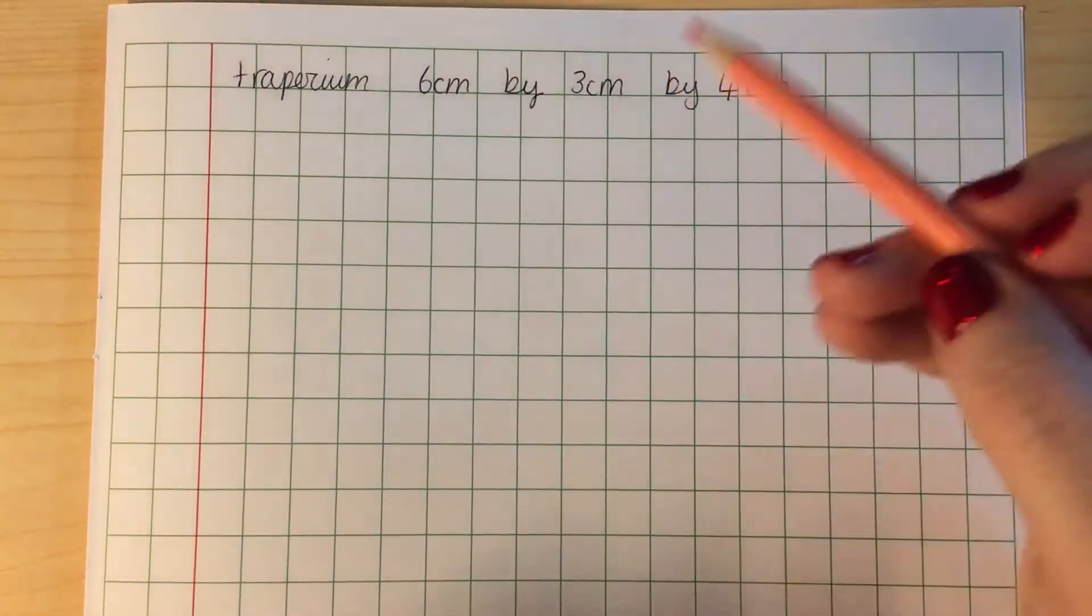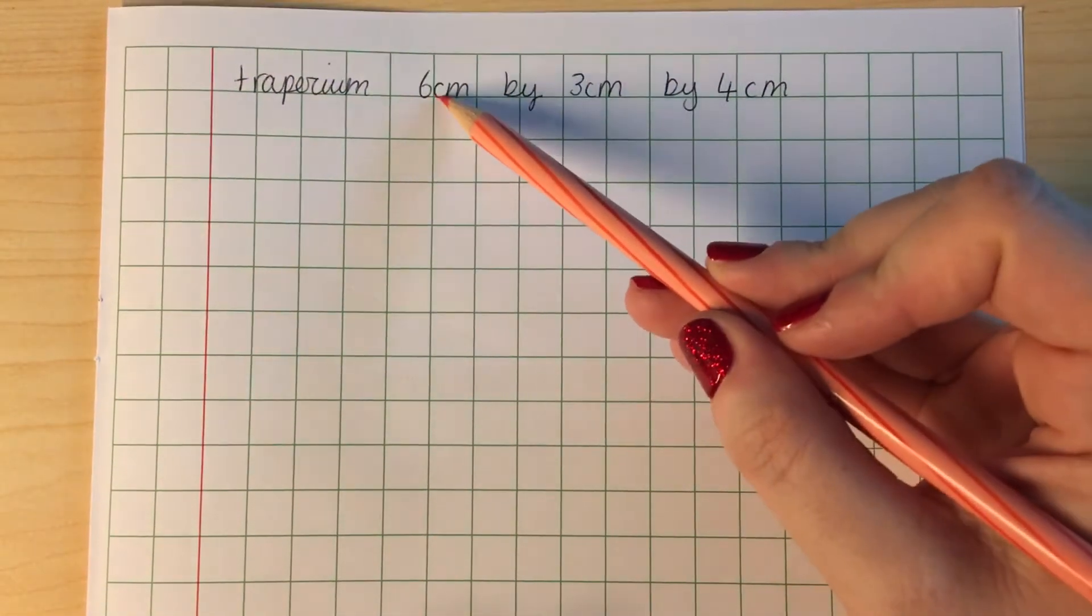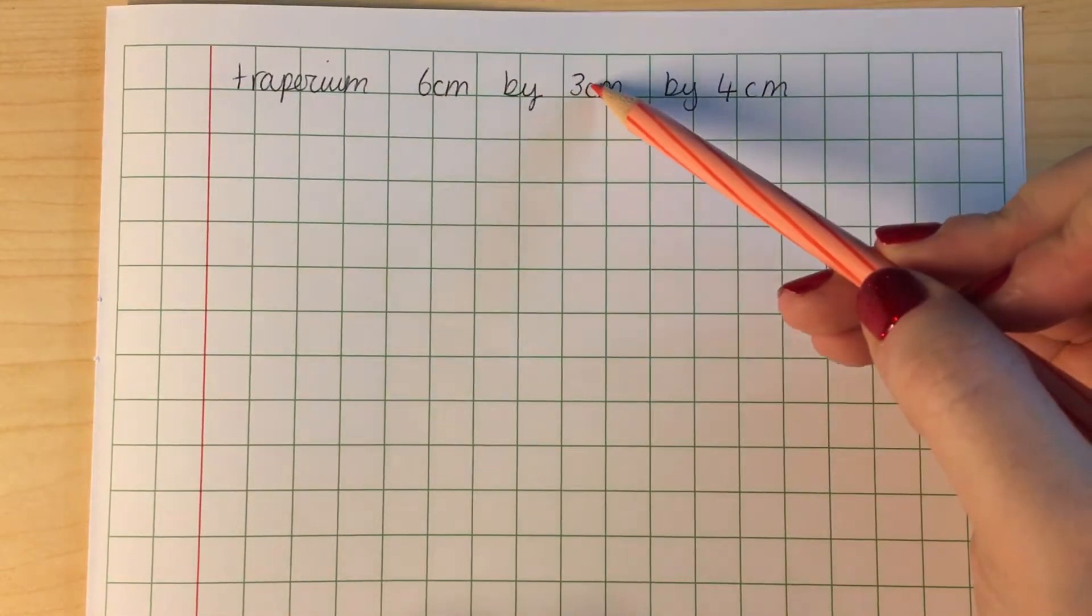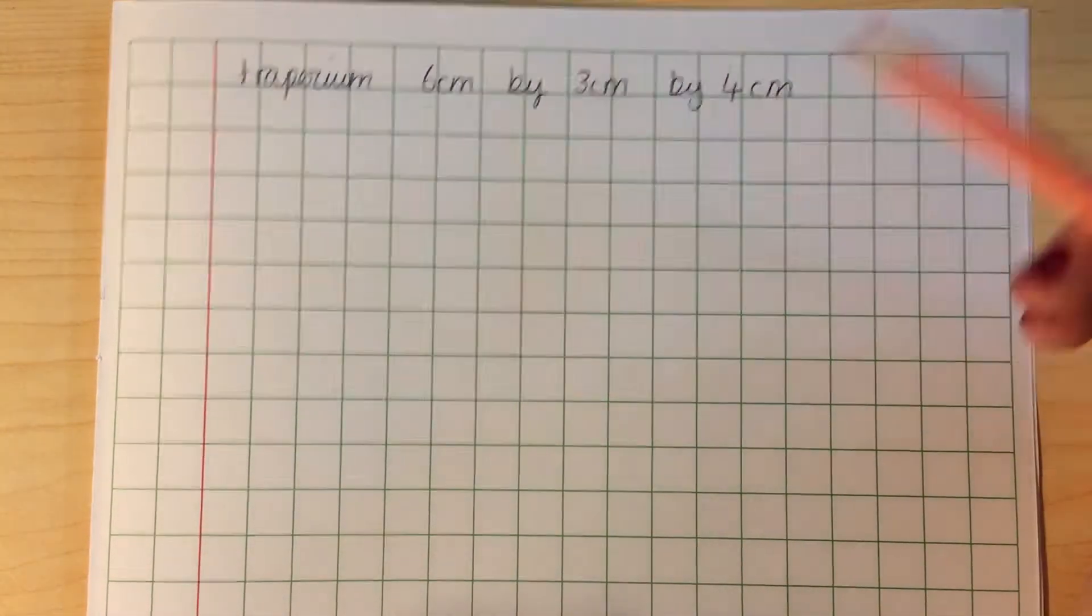Okay, so to draw a trapezium, we want to draw a trapezium which has a base of 6 cm, a side of 3 cm, and a top of 4 cm.